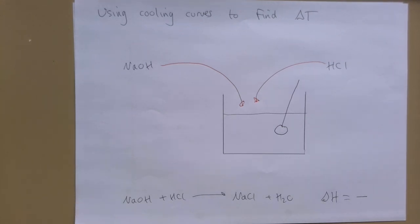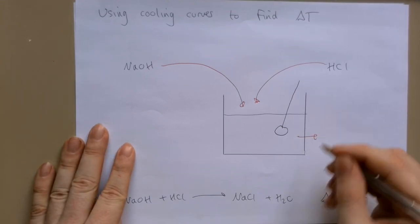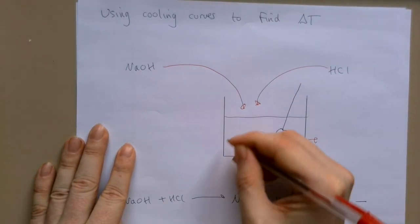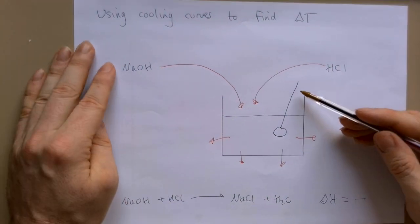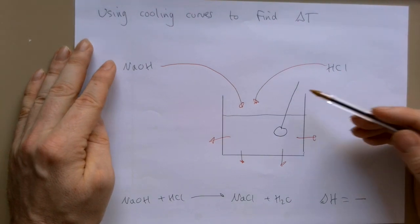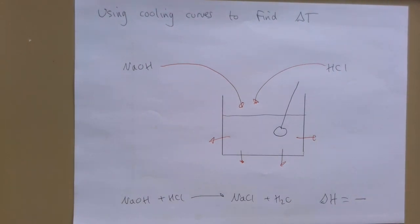However, we have a problem. Because we haven't got perfect insulation, we're going to get quite a bit of heat loss from our solution. So the problem is, the final temperature we measure will not be as high as it should be because some of that heat has been lost to the surroundings.